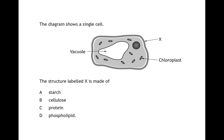In this next question, you have been given structure X. Although it would be useful for you to identify what structure X is, it wants you to tell it what the structure X is actually made of. Starch, cellulose, protein, or phospholipids. Pause the video and I will go through the answer. Hopefully you can identify that structure X is the cell wall, and in doing so, you'll know that the cell wall is made up of cellulose, so the correct answer would be B.